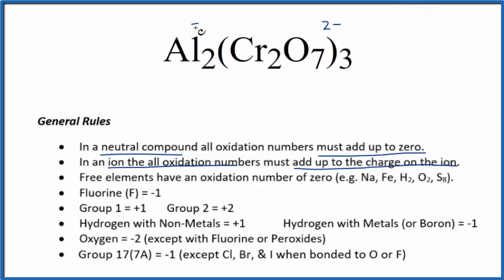Aluminum usually is going to be 3+. And that makes sense. 3 times 2-, that's 6-. 2 times the 3+ here, that gives us 6+. So everything adds up to zero.